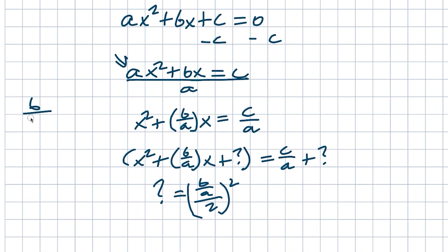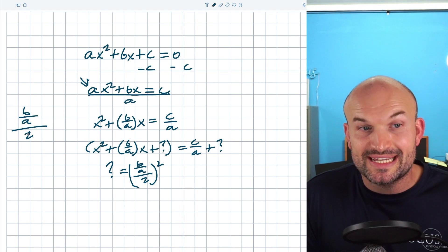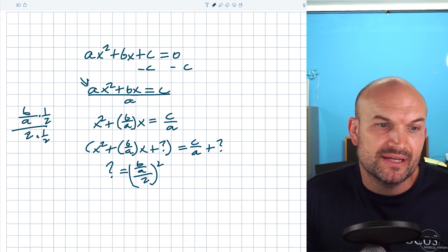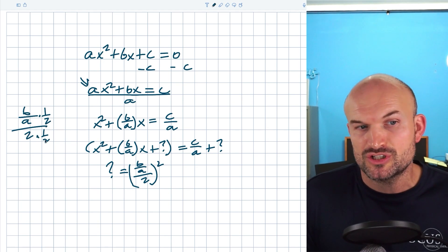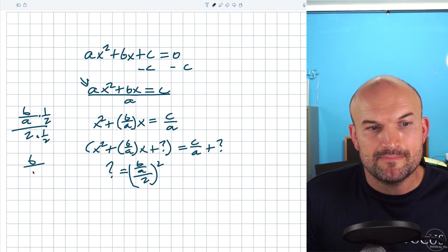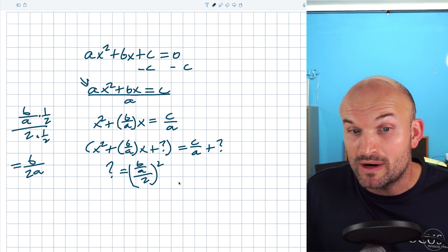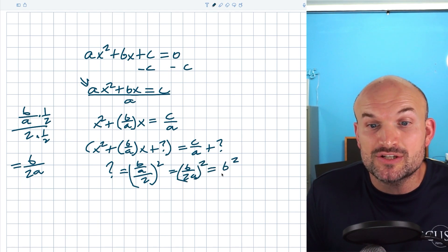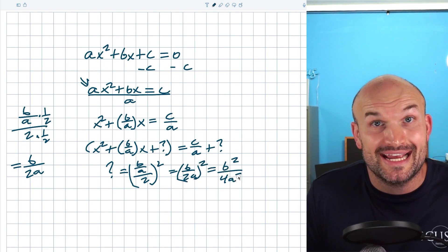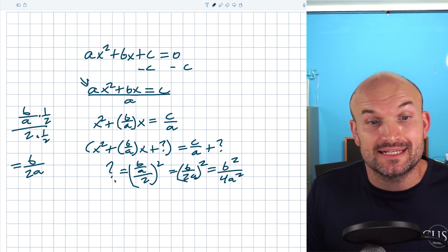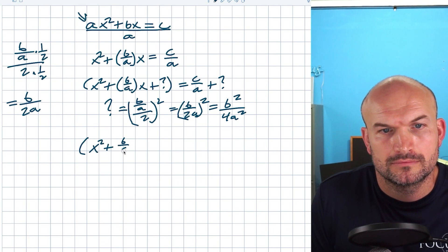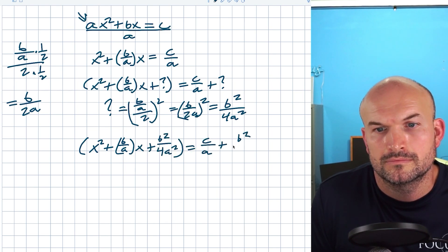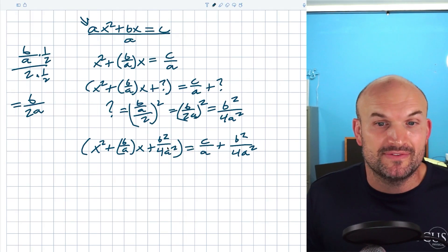I don't want to use b divided by two squared here because I don't want to confuse those general formulas with this specific derivation. So I'll take my question mark as the middle term divided by two, quantity squared. When we have a fraction divided by a number, we multiply by its reciprocal on the top and bottom — anything multiplied by its reciprocal goes to one. So this becomes b over a divided by two, which is b over 2a. Squaring that gives b squared over 4a squared — and that's what we add to both sides, completing the square.